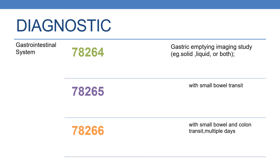The next is 78264, which deals with gastric emptying imaging study — for example, solid, liquid, or both. The next is 78265, which deals with gastric imaging study with small bowel transit. The next is 78266, which deals with gastric emptying imaging study with small bowel and colon transit, multiple days.